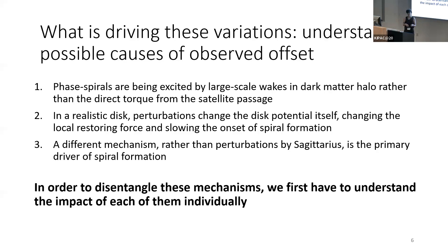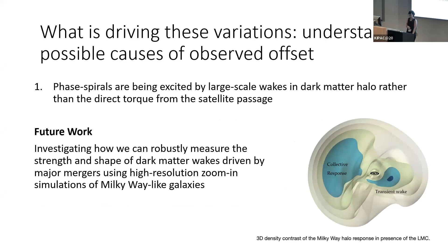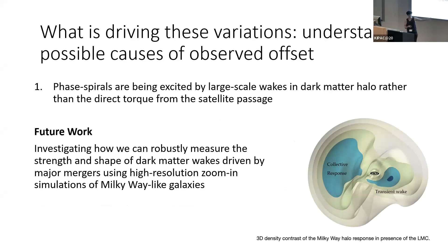In order to understand which of these mechanisms is at play, we really want to understand each of them individually. That brings me to some future work I'm going to be doing. This isn't focused directly on Sagittarius, but is interested in studying the impact of large-scale wakes. Another place people have been really interested in dark matter wakes is with the infall of the Large Magellanic Cloud — the most massive satellite currently disrupting the Milky Way, thought to be on its first passage, and having a large dynamical response in the dark matter halo. I'm going to be doing work trying to understand how we can robustly characterize the strength and shape of these wakes in simulations, to understand their impact in fully realistic cosmological settings.